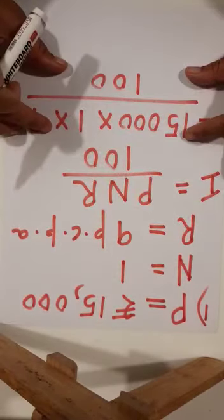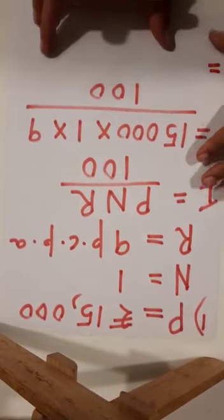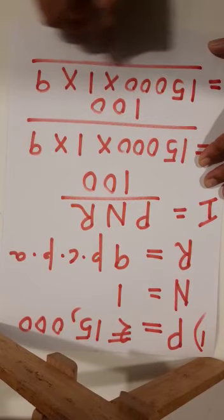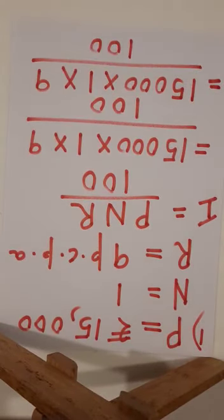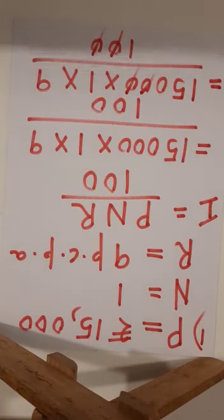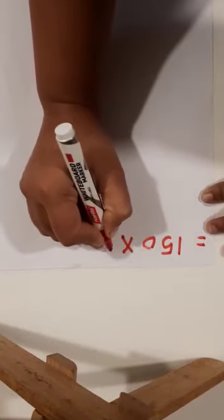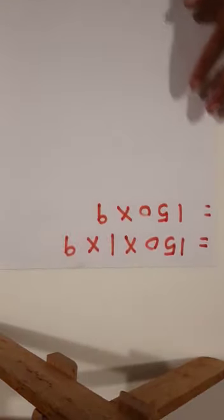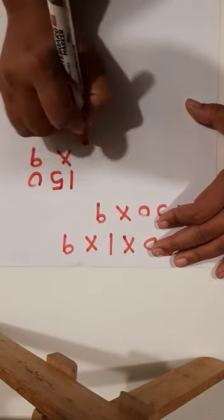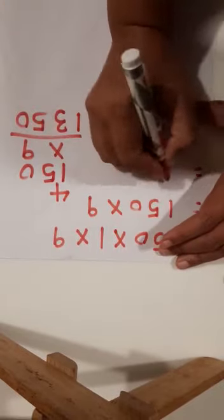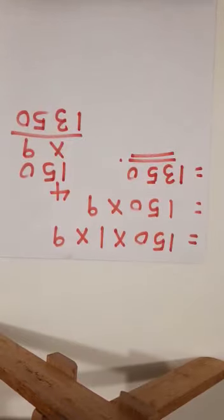In the next step, copy the entire thing again: 15,000 multiplied by 1 multiplied by 9 upon 100. Now do your cancellations — cancel the zeros. That leaves 150 multiplied by 1 multiplied by 9, which is 150 multiplied by 9. Working: 150 multiplied by 9 — 0 times 9 is 0, 5 times 9 is 45 carry 4, 9 times 1 is 9 plus 4 is 13 — so the result is 1,350.